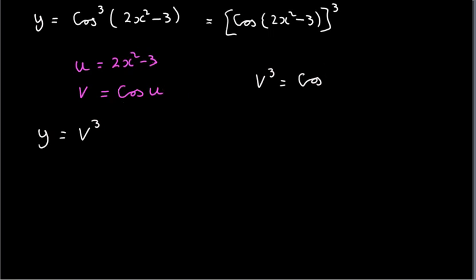We know what u is: u is 2x squared minus 3. So we can see that v cubed is indeed equal to y. We write our function like this.